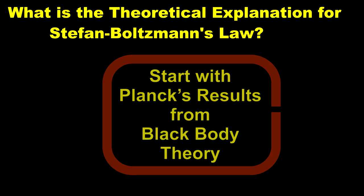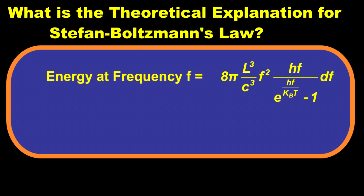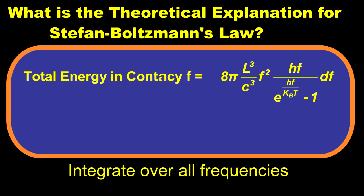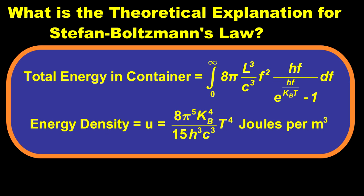Here's how the logic went. First, remember Planck's equation for the energy in the container at a particular frequency — we derived that in previous videos. To get the total energy in the whole container, just add up the energy from every frequency. The integral is not easy, but it's doable. Divide that total energy by the volume of the container and you get the energy density, which is what we will need shortly.